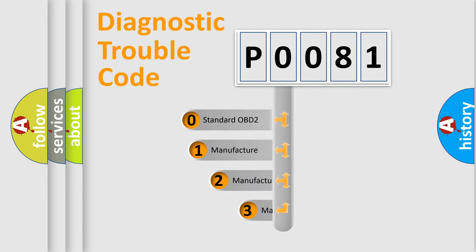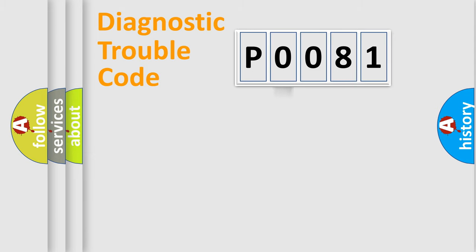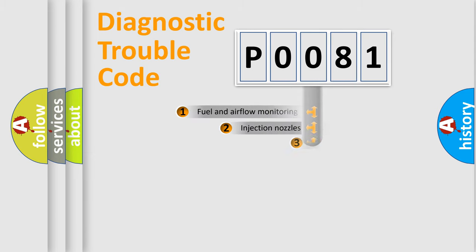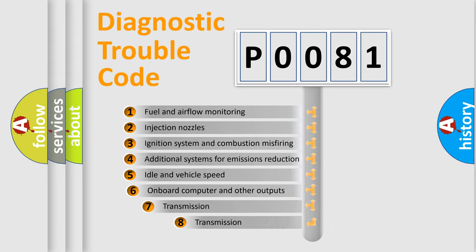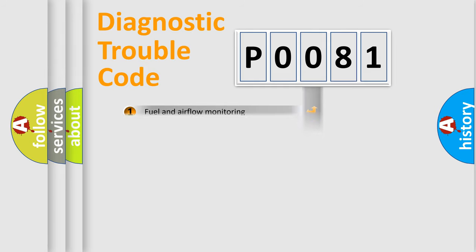If the second character is expressed as zero, it is a standardized error. In the case of numbers 1, 2, or 3, it is a more prestigious expression of the car-specific error. The third character specifies a subset of errors. The distribution shown is valid only for the standardized DTC code.